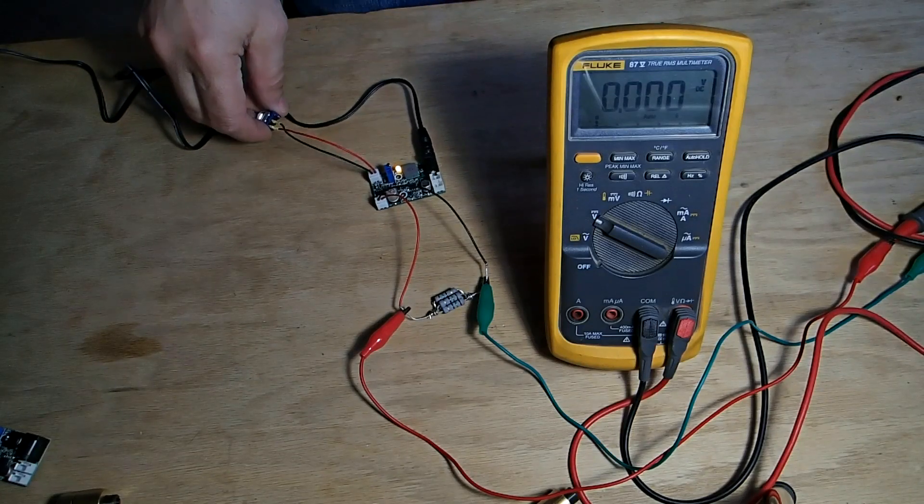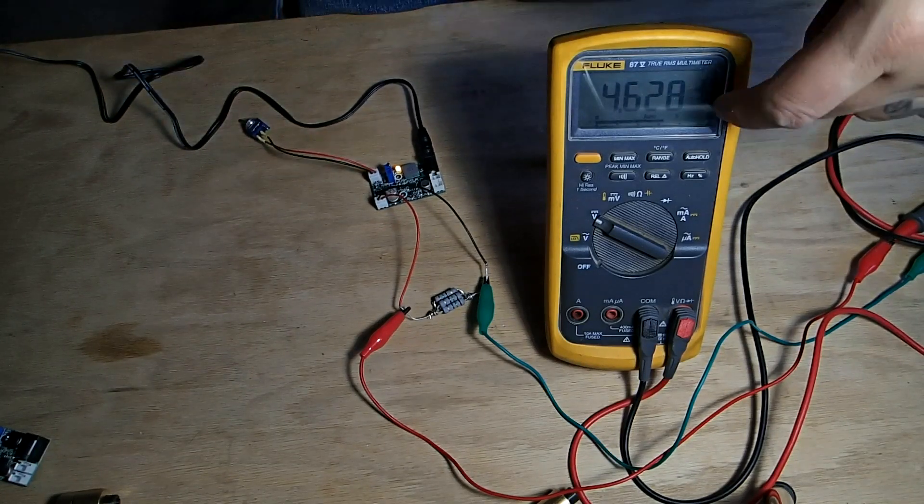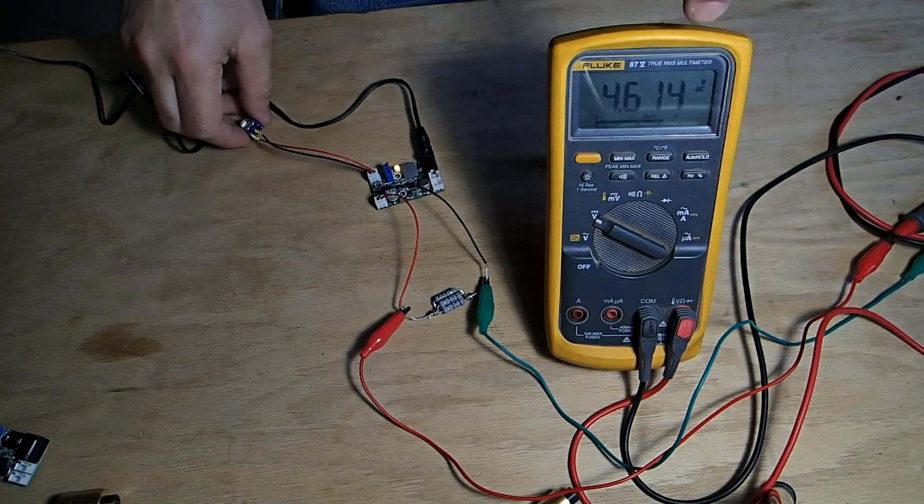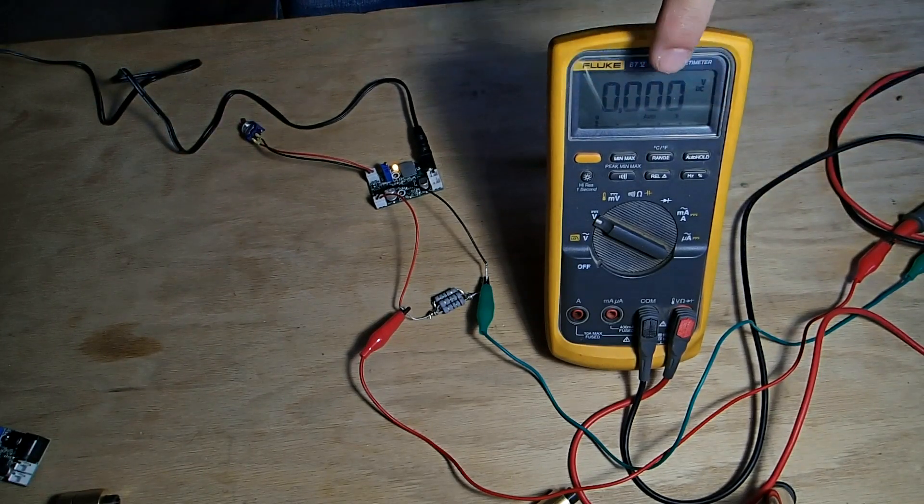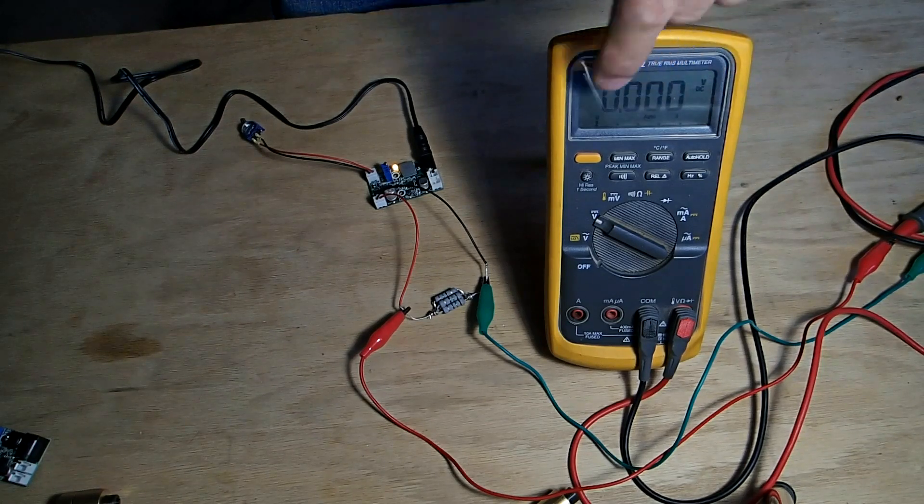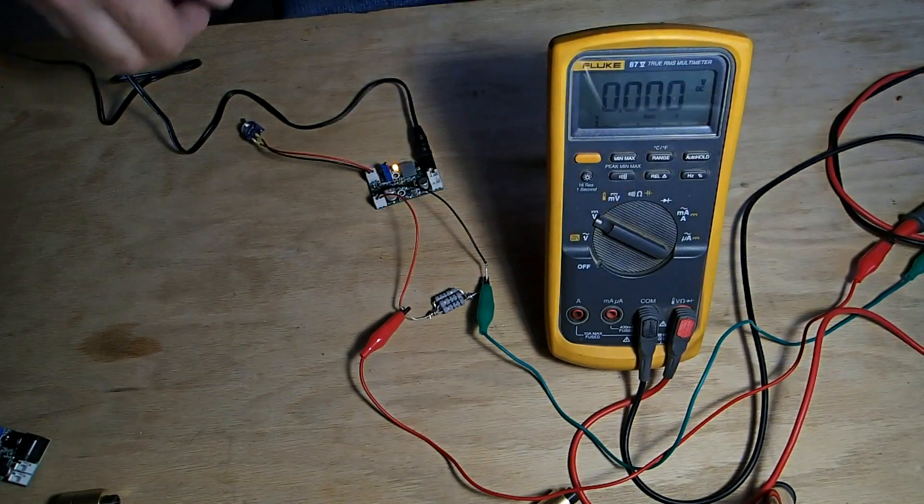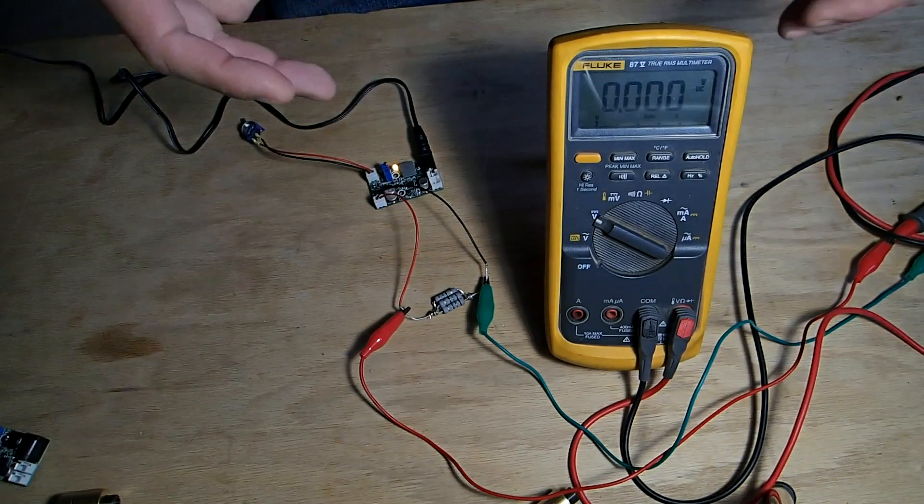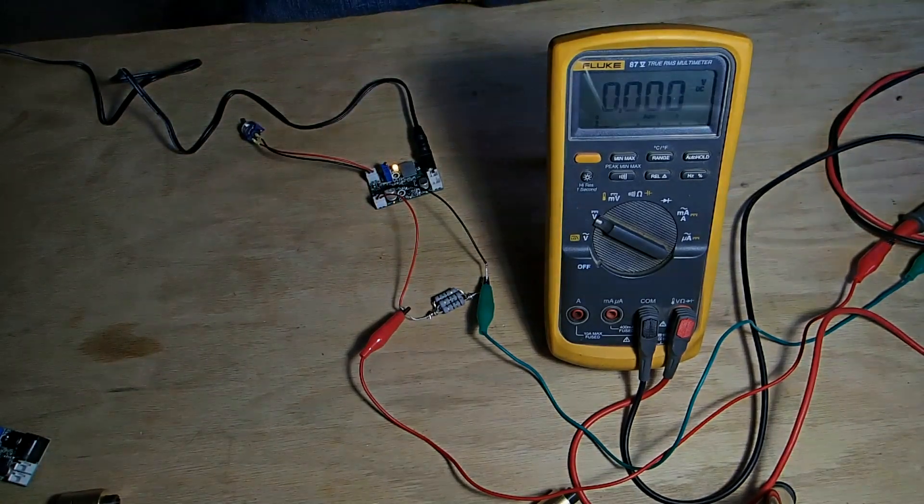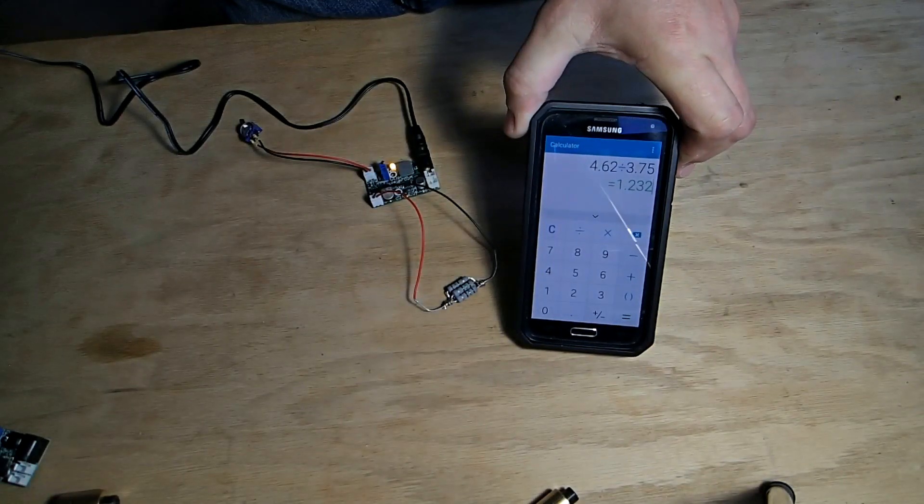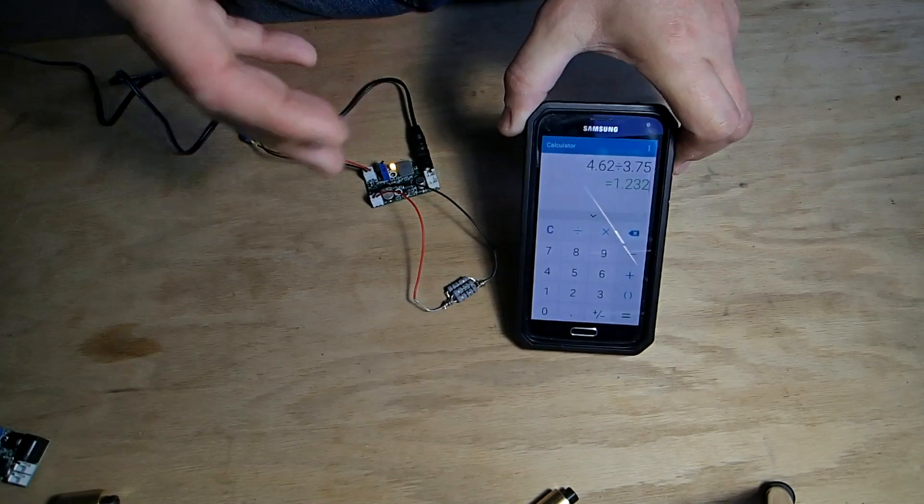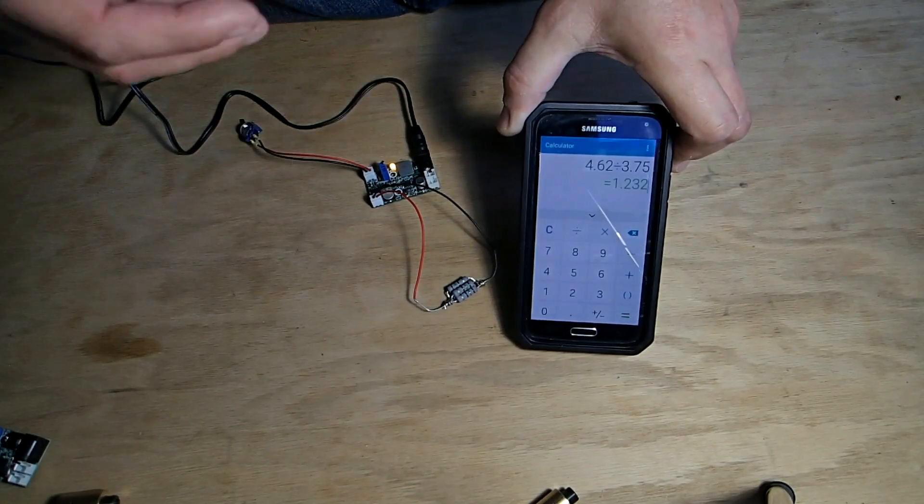When we turn it on we're going to read a voltage here. 4.62. So what we do is we'll take that voltage, divide the voltage by the 3.75 ohm resistors, and then we will get the current. Divide the voltage by the resistance to get the current which is 1.23 amps. So that way we know it's going to run the laser diode without destroying it.